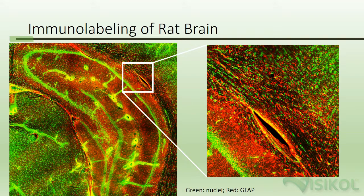Here is an example of results obtained from immunolabeling a rat brain. In this image, the green shows nuclei and the red shows cells labeled with GFAP. Here we see the rat brain hippocampus.